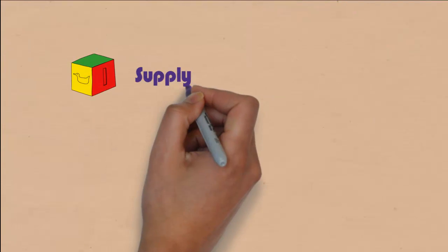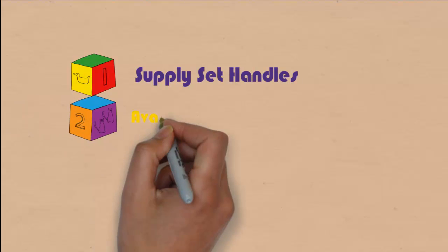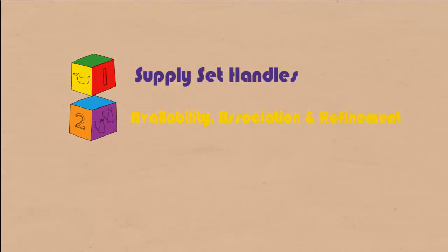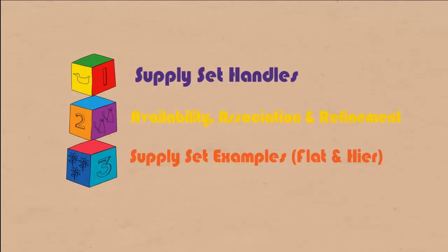Here's what we cover in this video series. We will talk about supply set handles and their availability, association and refinement. Show an example of flat and a hierarchical UPF using supply sets. And finally, describe the hierarchical flow using black box, ETM and block abstract models.